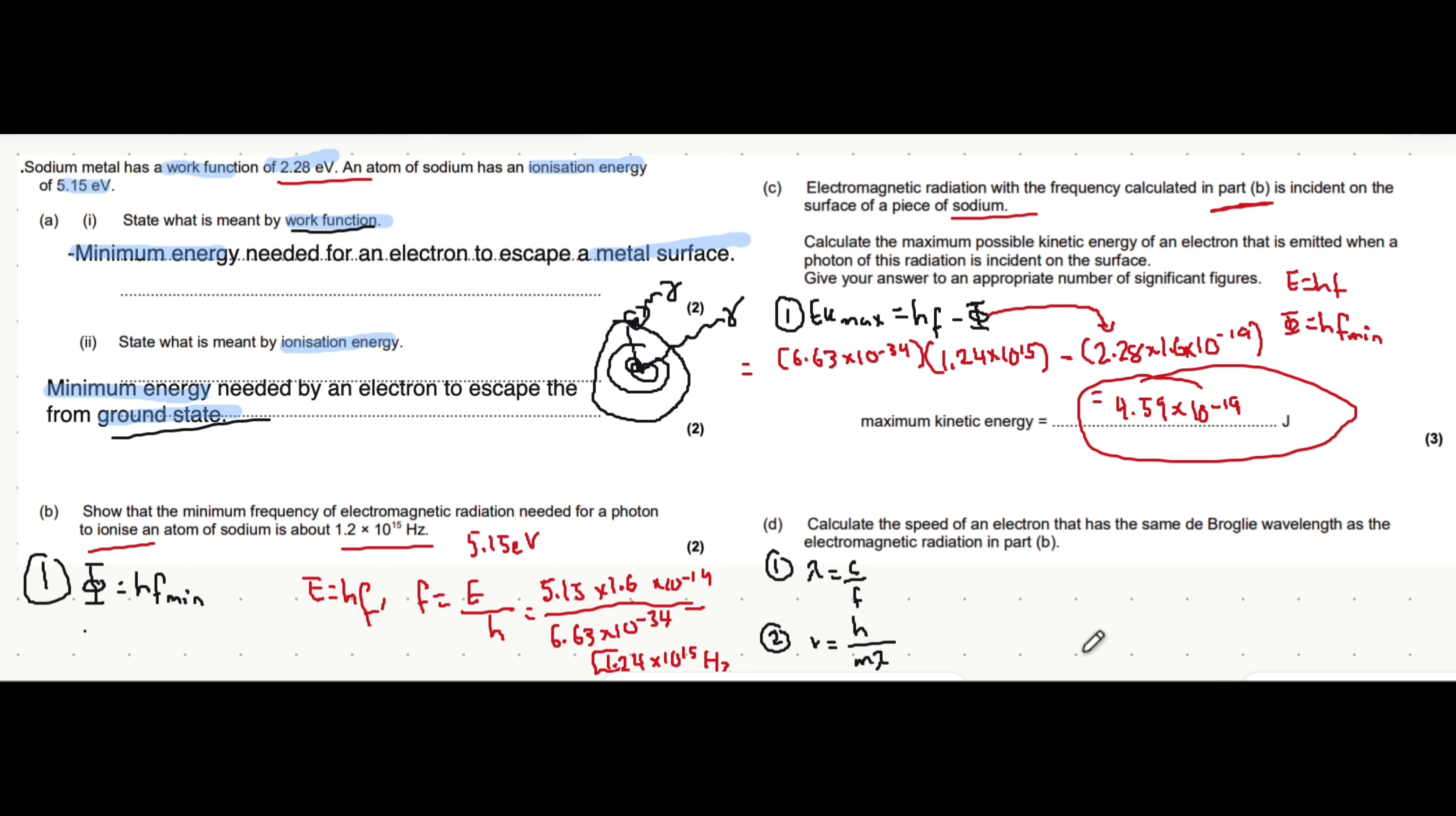Part d says calculate the speed of an electron that has the same de Broglie wavelength as the electromagnetic radiation in part b. That means the wavelength is the same as the wavelength of the photon that causes this frequency. We use wavelength equals the speed of the photon, 3 times 10 to the 8, divided by the frequency from part b, 1.24 times 10 to the 15.